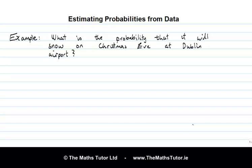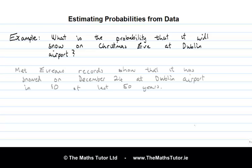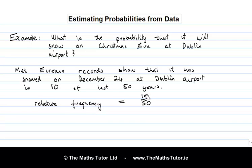One strategy is to look for some relevant data and try to estimate the probability from the data. We might look at the Met Éireann records and see how often it has snowed at Dublin Airport in the past. Let's say that Met Éireann tells us that it has snowed on Christmas Eve at Dublin Airport in 10 of the last 50 years. We can conclude that the relative frequency of the event — snow on Christmas Eve — is 10 over 50.